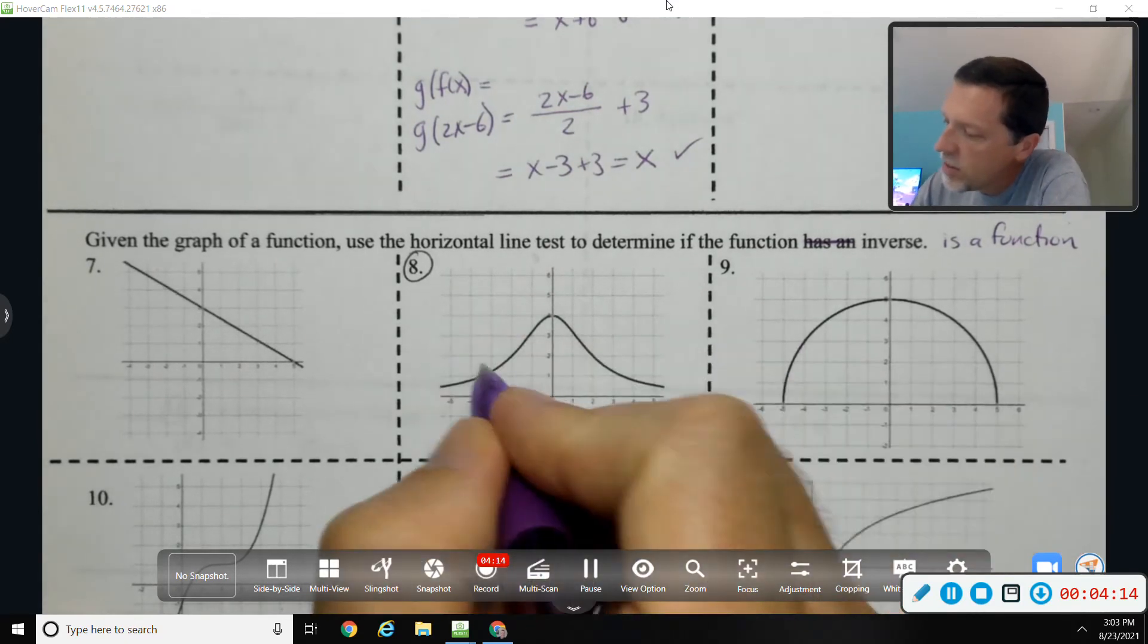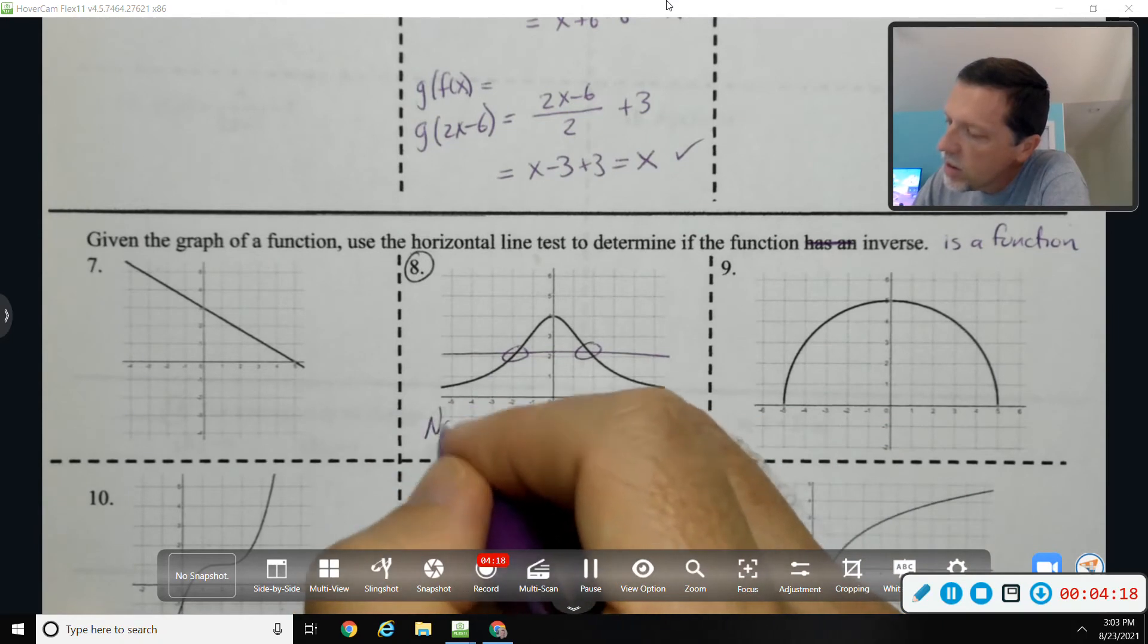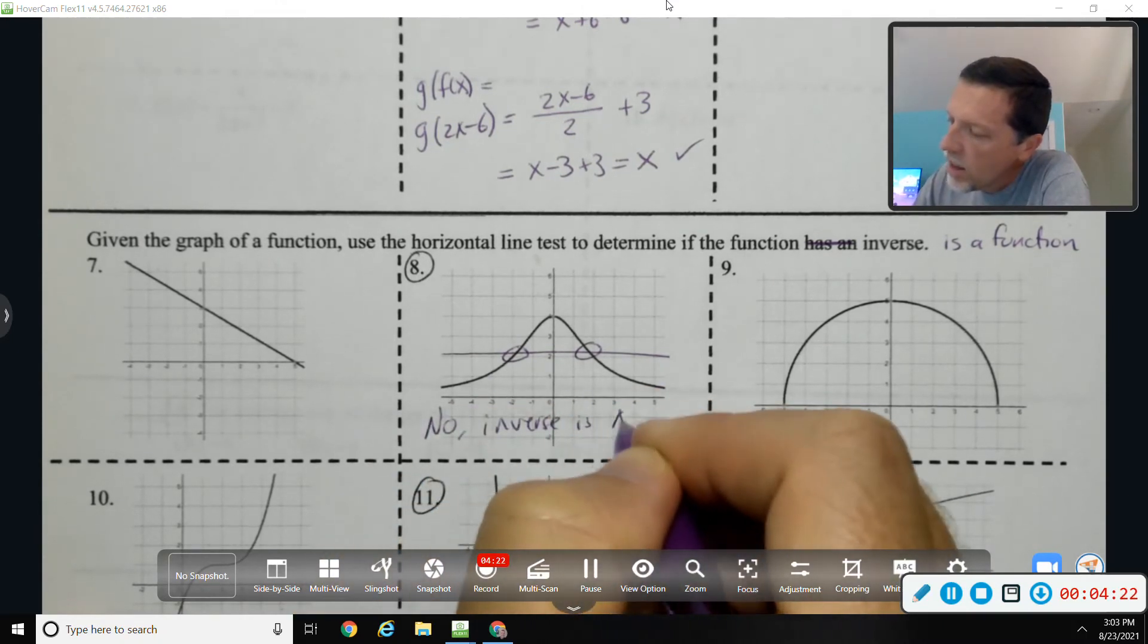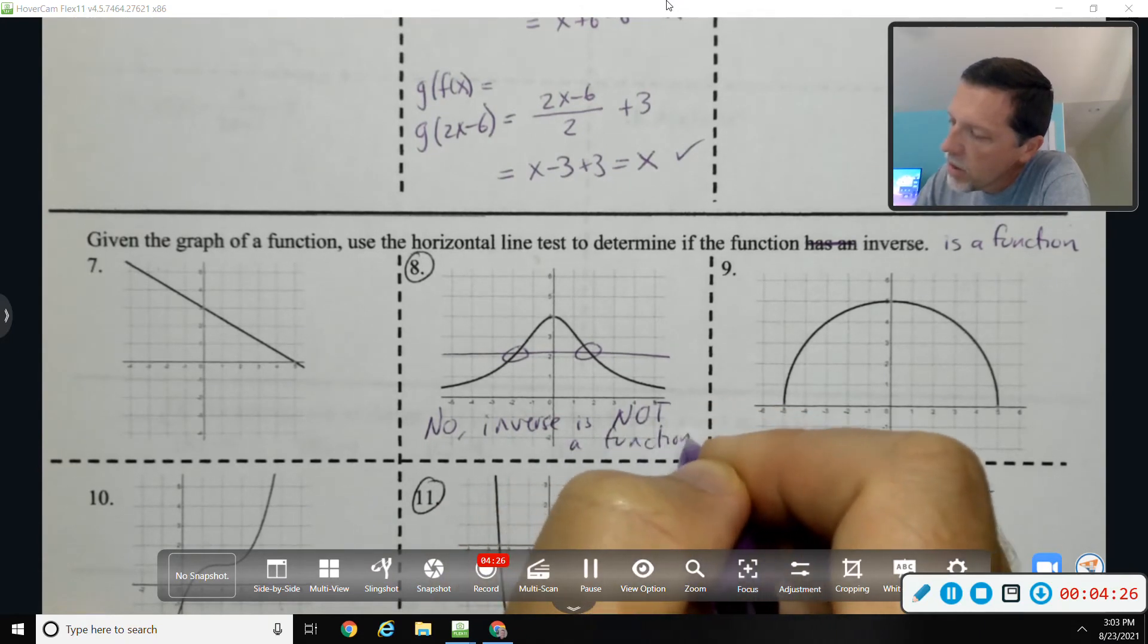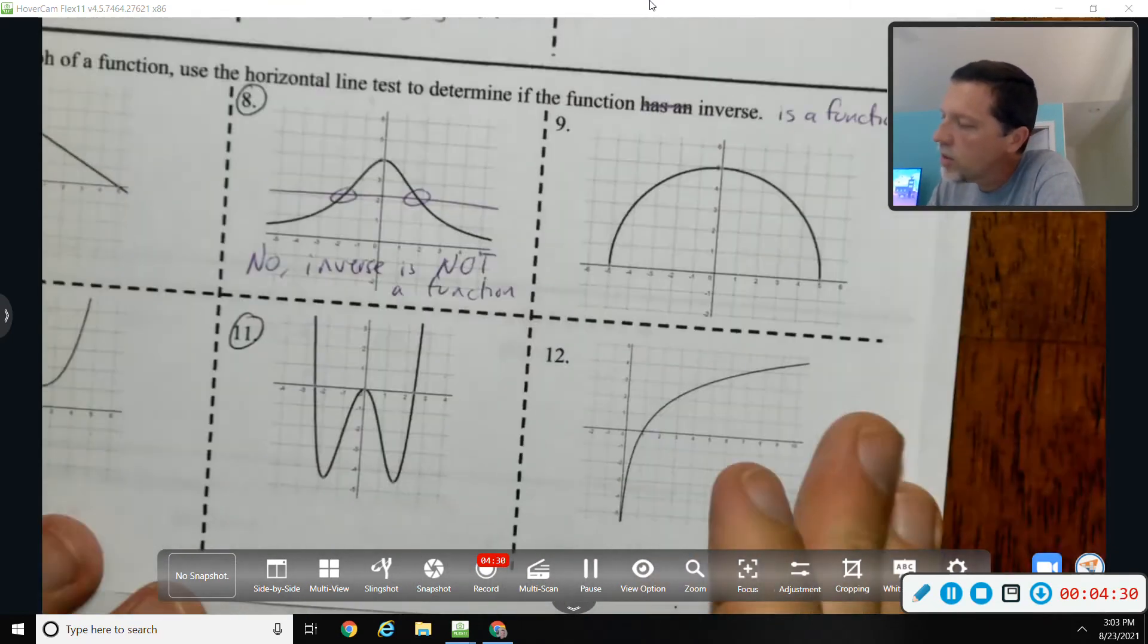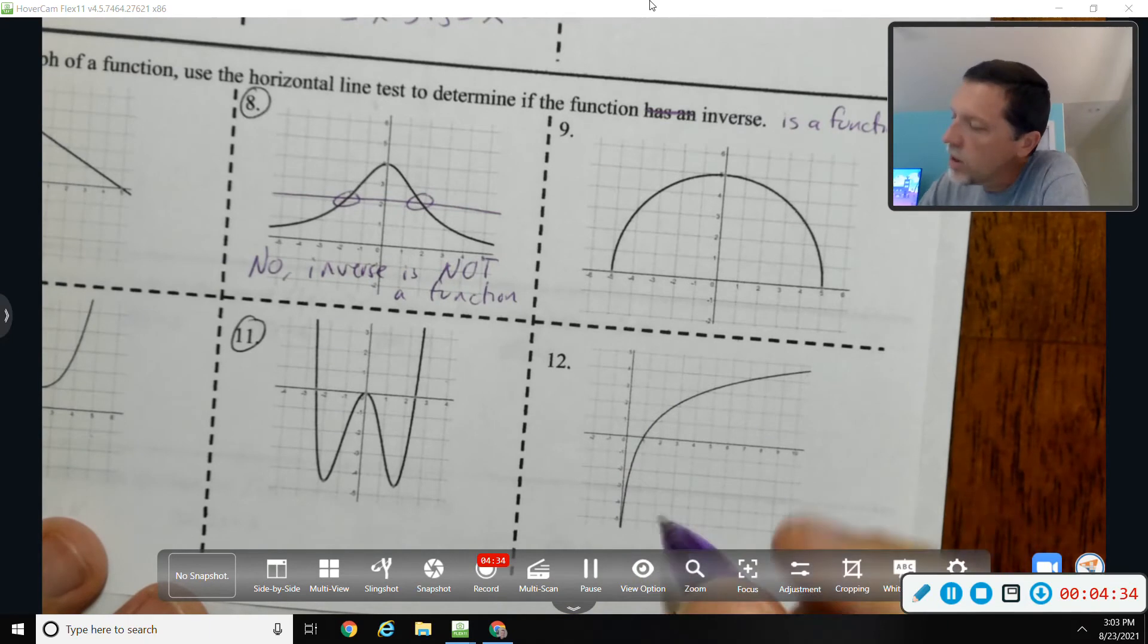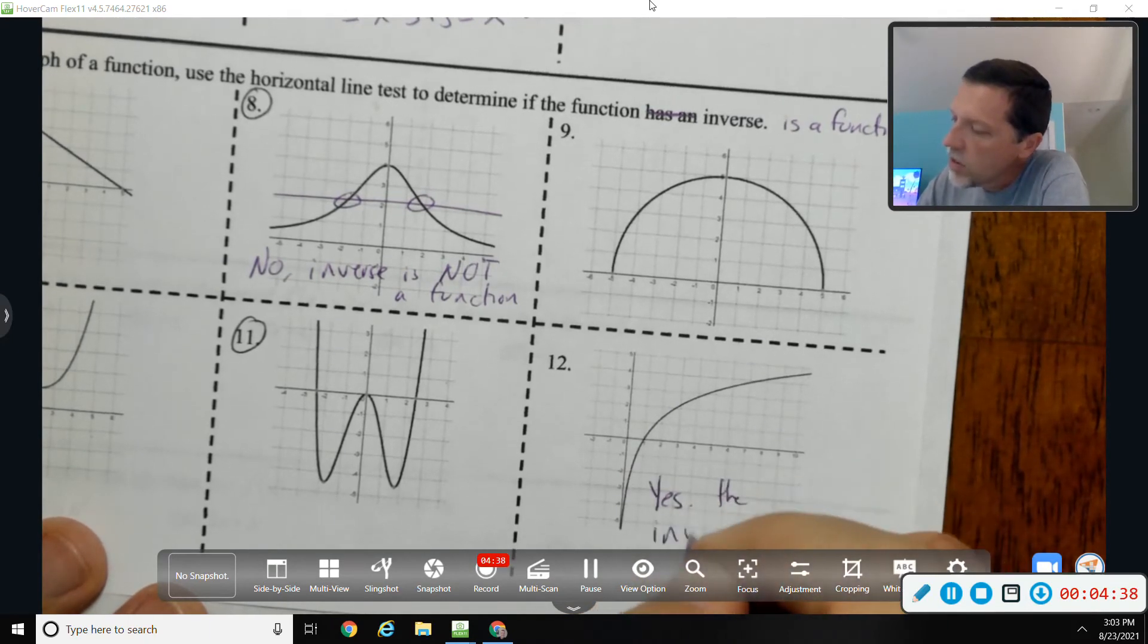So easy to do—there's a horizontal line that hits twice, so no, the inverse is not a function. Pretty simple. If we look at number 12, any horizontal line we draw would only hit once, so that would be yes, the inverse is a function.